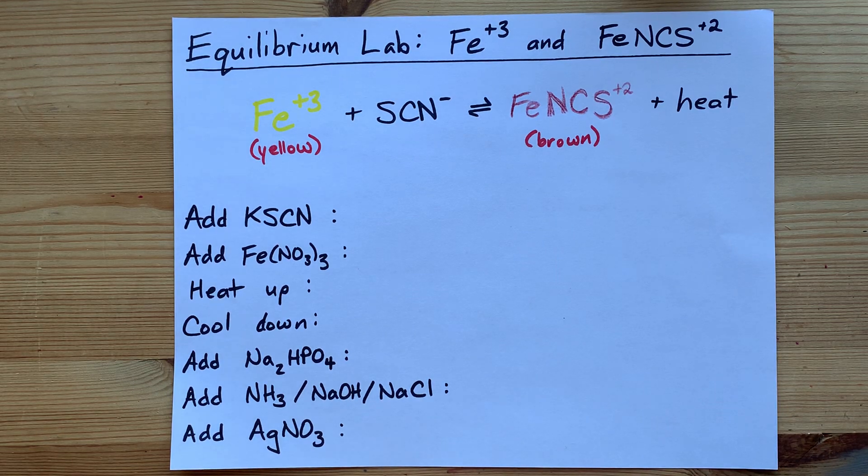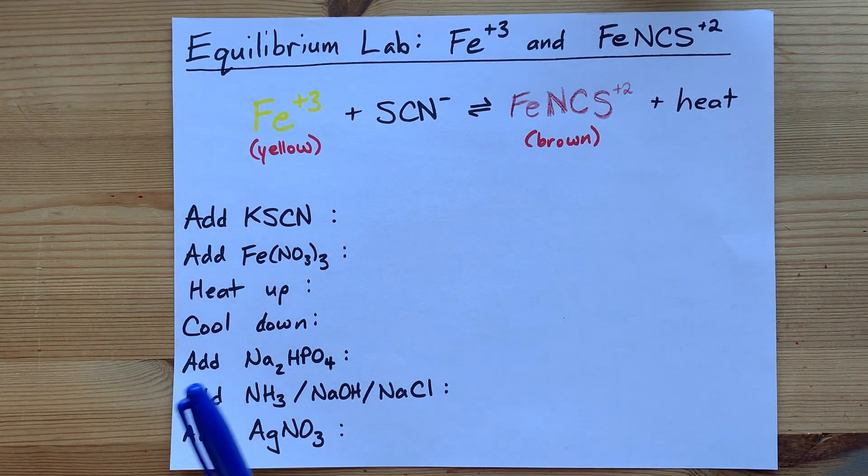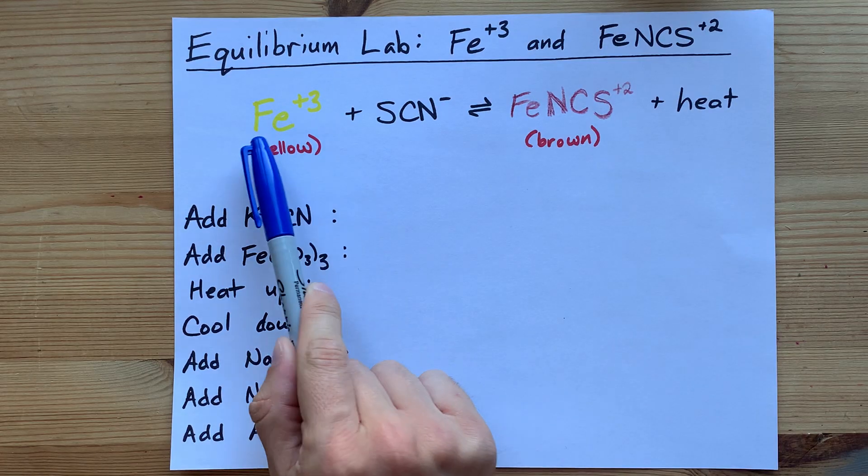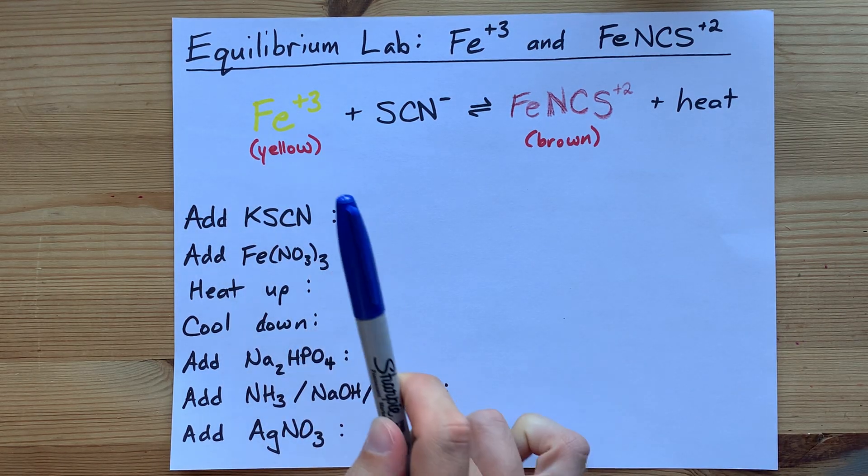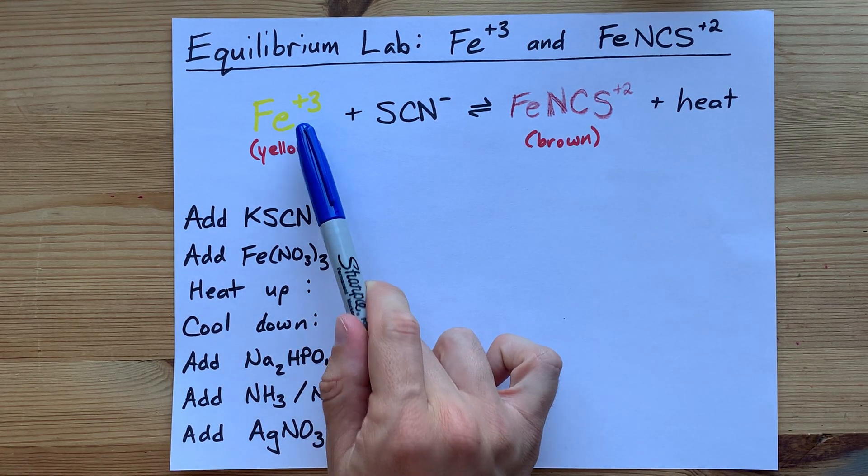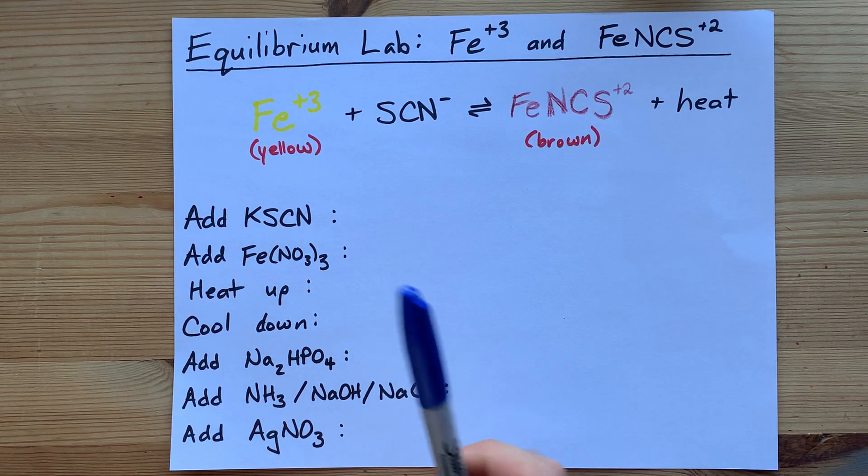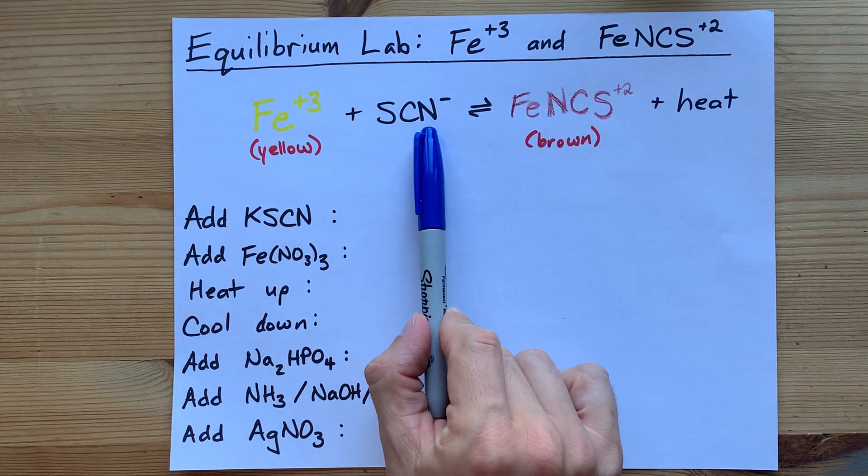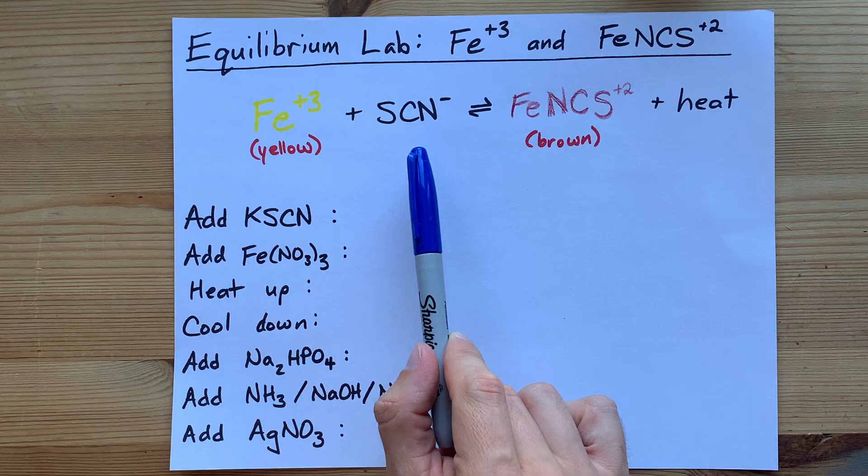One of the classic equilibrium labs has teachers having students mix iron 3 plus ions, which appear as yellow in aqueous solution, with thiocyanate ions, SCN minus.